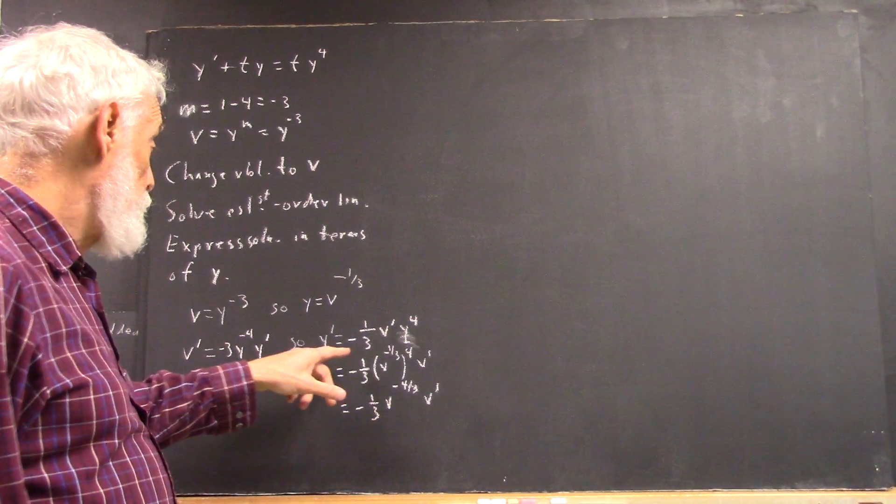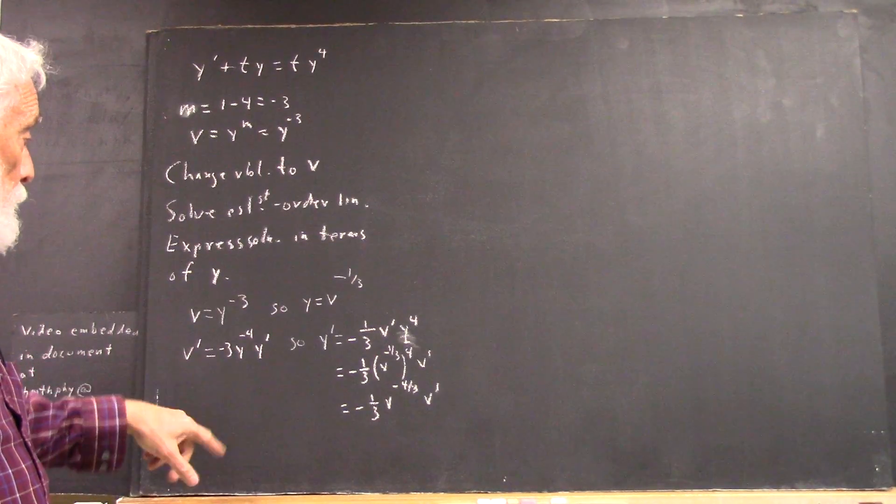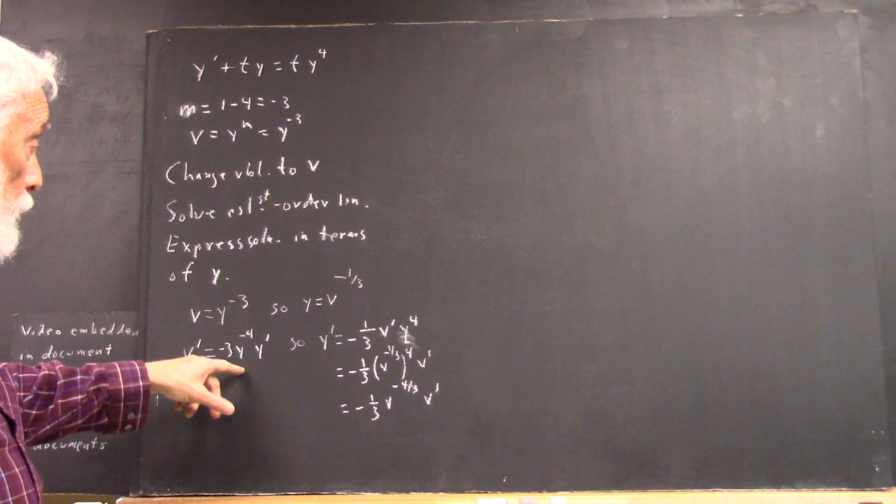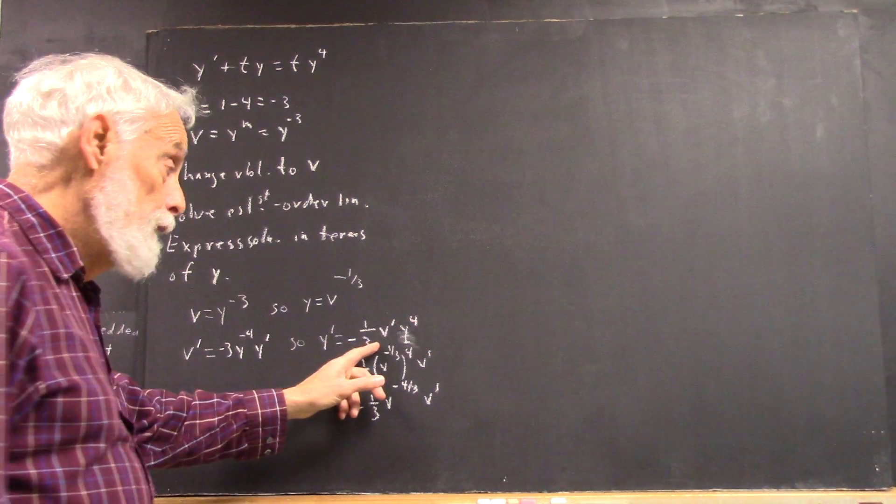So y prime is going to equal what? Well, we solve this for y prime. We're going to get a negative one-third and we're going to get a y to the fourth. So we get one-third y to the fourth times v prime.